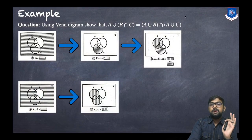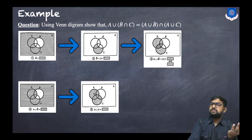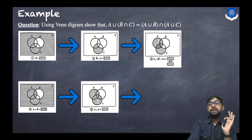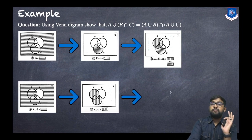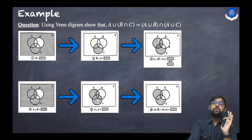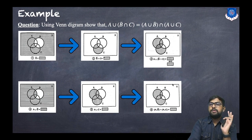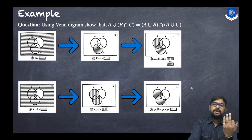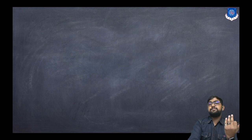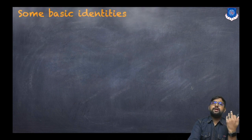Next step, we calculate A ∪ C — that is straightforward, giving us A ∪ C. Finally, we find the intersection of those two results, and you can see that both Venn diagrams are the same — so it is proved.